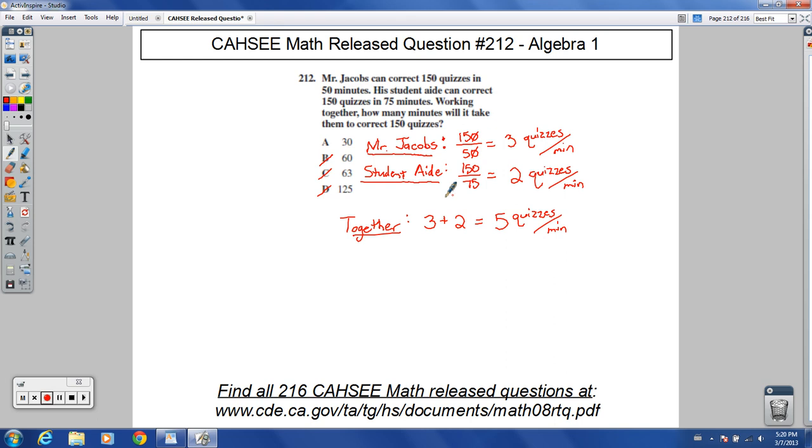So the total time—how many minutes would it take? Let's have this as our final answer. 150 quizzes divided by 5 quizzes per minute equals 30.